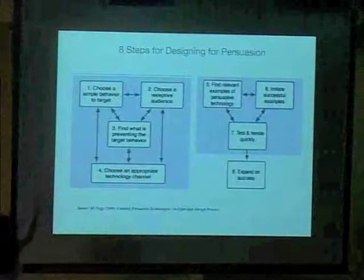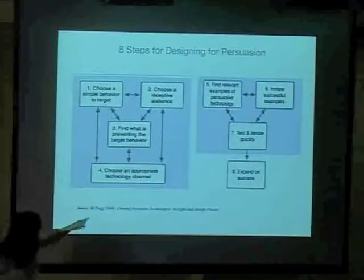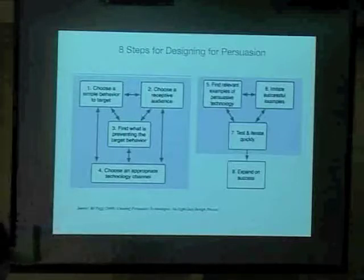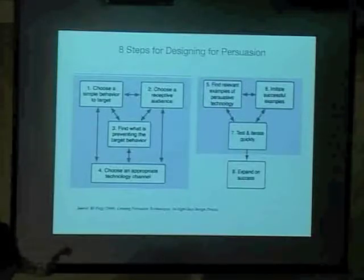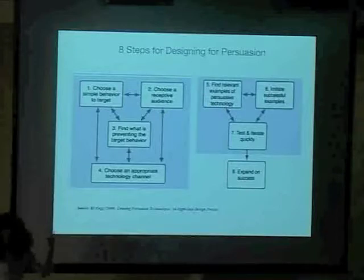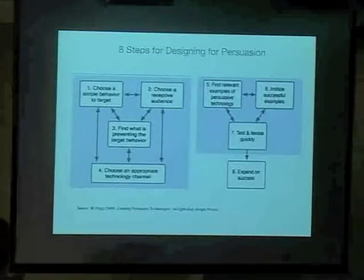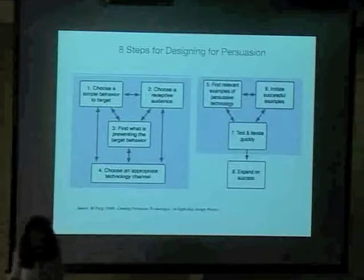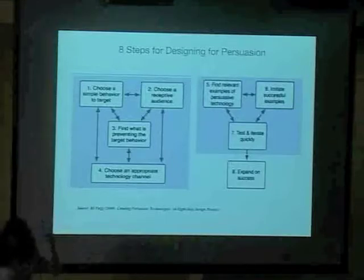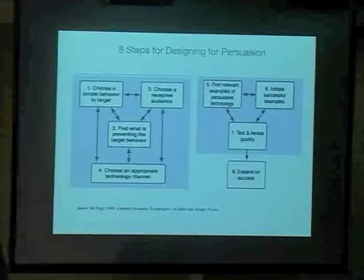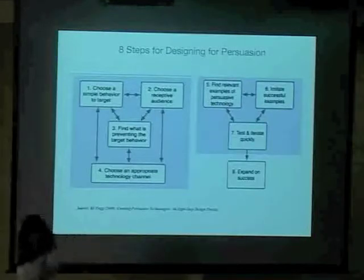The eight steps for designing for persuasion — from BJ's 2009 article. One: choose a simple behavior, one little thing. Two: choose a receptive audience — find people who are motivated to do it; there's no point pushing a rope if people aren't interested. Three: find out what's preventing the target behavior — what is the barrier, how can you remove it? Four: choose an appropriate technology channel — we like persuasive technology because we can measure effectiveness; if you can't measure it, it's not worth doing. Five: find relevant examples of persuasive technology. Six: imitate the successful ones. As Picasso said, 'Good artists borrow, but great artists steal' — take something great from one domain and apply it to another.